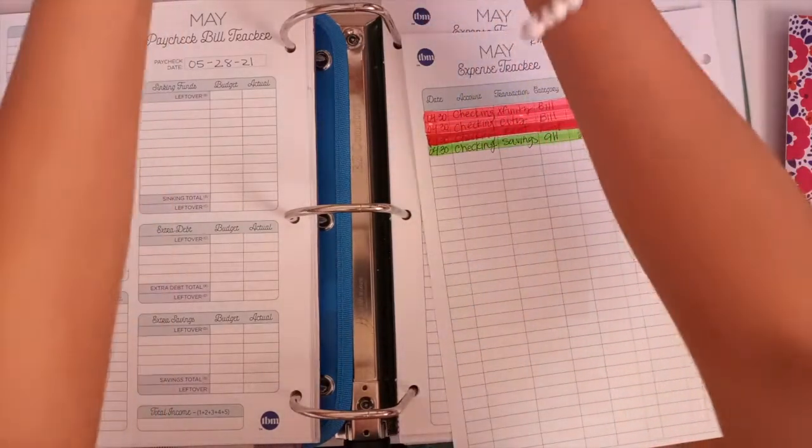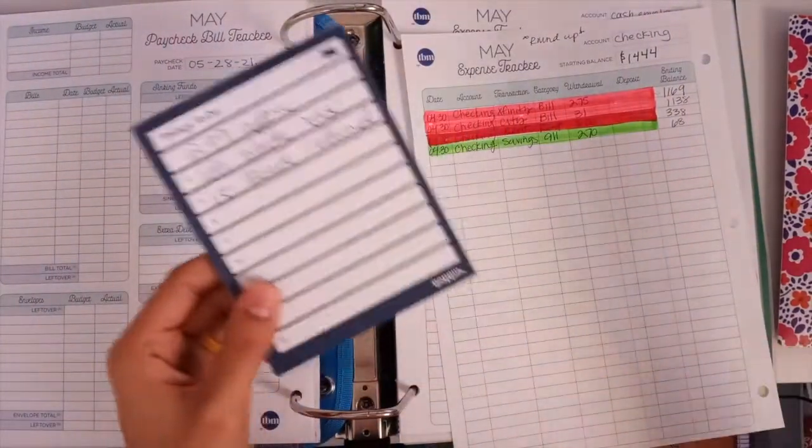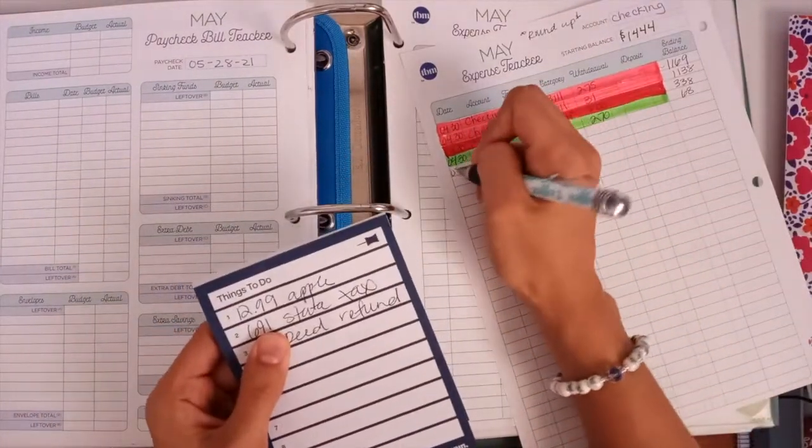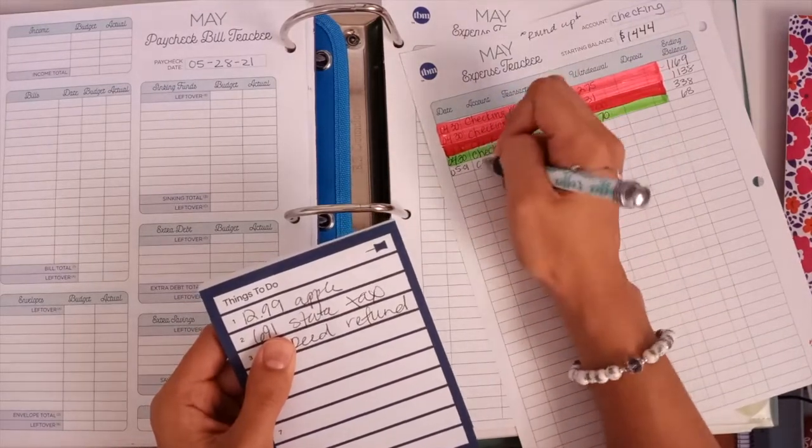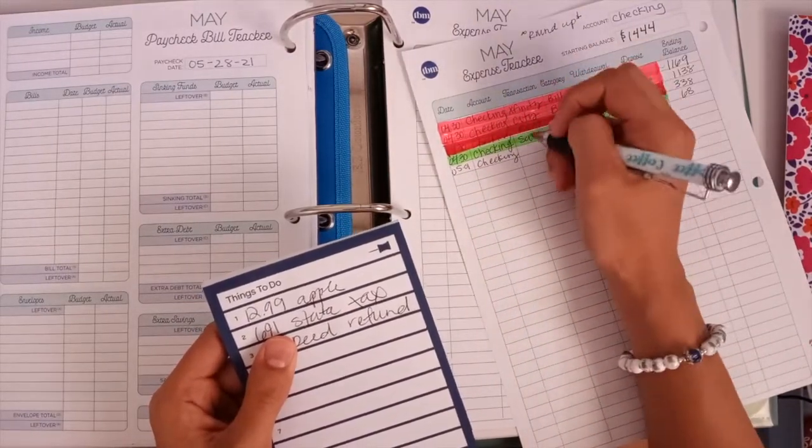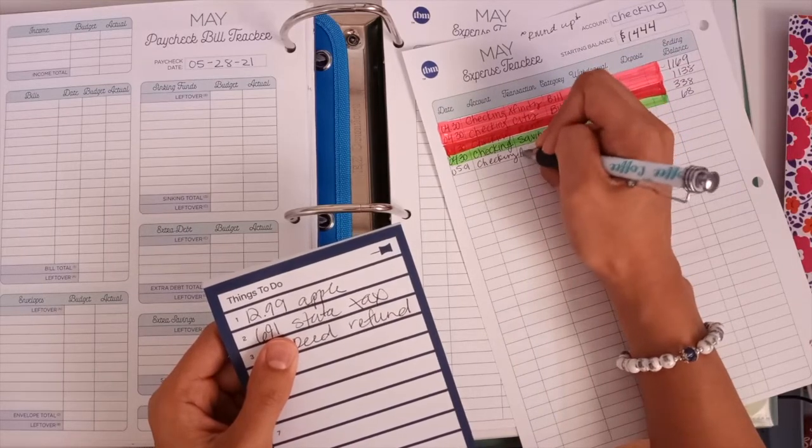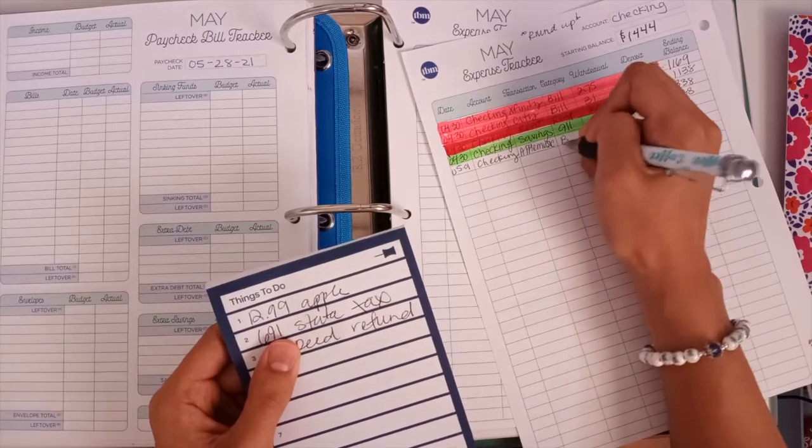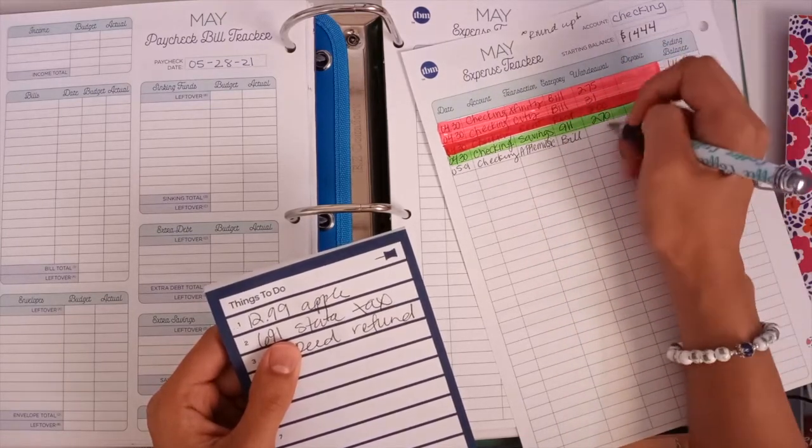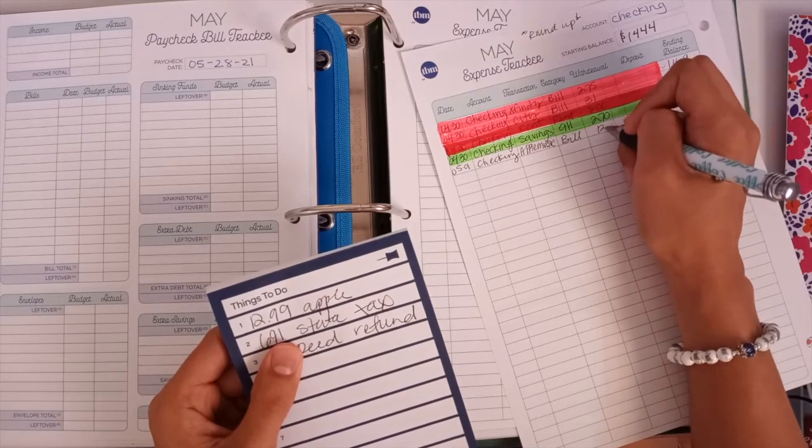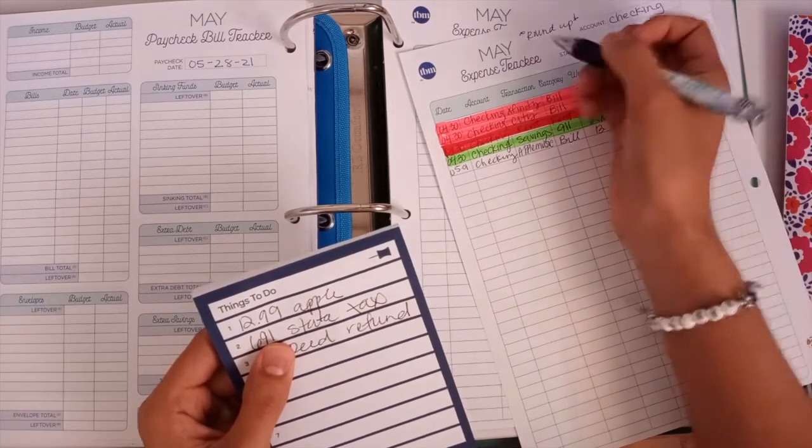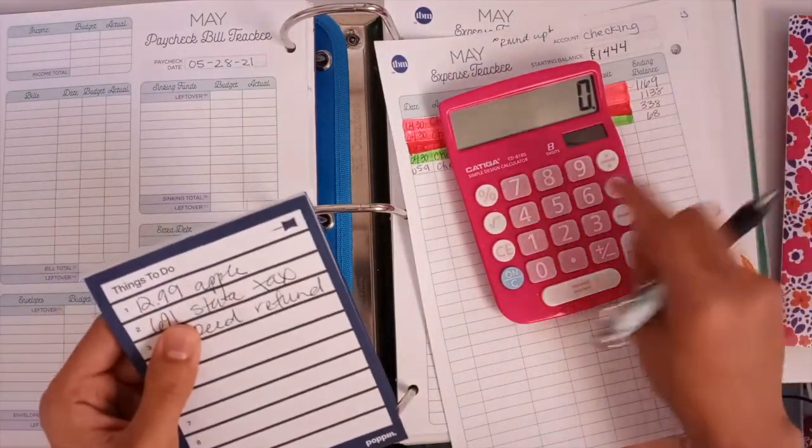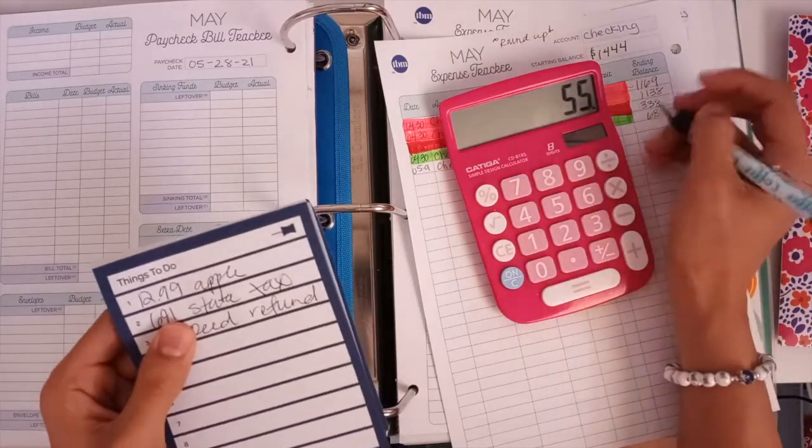I went to the bank and looked at my checking account. We have some money movement that happened. Today is the first and I saw that Apple Music came out as a bill at $12. I'm rounding up to $13, so I'm going to subtract that from what was already in there. $55 in here.